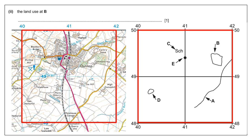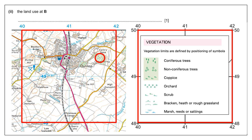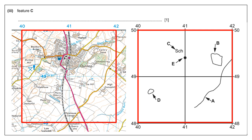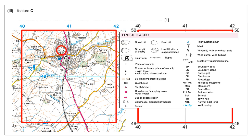For land use at B, focusing on that area, it looks like vegetation — specifically coniferous trees. For Feature C, the symbol SCH is shown. Going to the general features in the key, SCH stands for school.